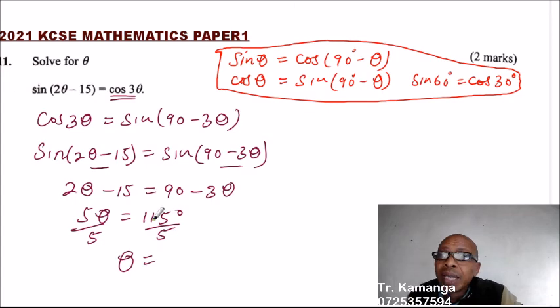Okay, this is 105, not 115. So we say 105 divided by 5, and that should give you 21. So what this means is that theta equals 21. So that is the answer.